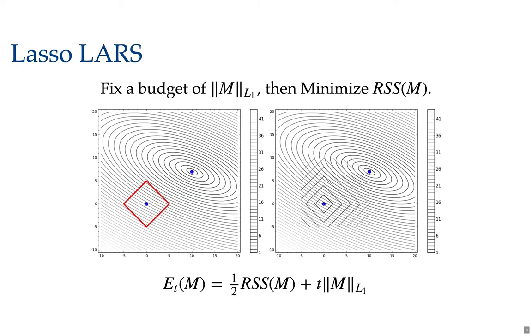If you choose t to be very, very large, as t tends to infinity, you're saying that the residual sum of squares does not matter, and what really matters is the simplicity of the model. But of course, ultimately, you want to find some balance.